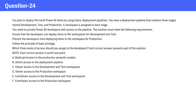You need to provide Power BI developers with access to the pipeline. The solution must meet the following requirements: ensure that the developers can deploy items to the workspaces for development and test, prevent the developers from deploying items to the workspace for production, and follow the principle of least privilege. Which three levels of access should you assign to the developers?